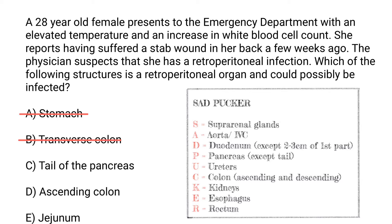The tail of the pancreas — this is where things can be a bit specific, so let's leave that one, because we know some aspect of the pancreas is going to be retroperitoneal and some aspect is going to be intraperitoneal. Ascending colon: we know that the ascending colon is a retroperitoneal organ, so we're going to keep it. Jejunum is going to be an intraperitoneal organ, therefore we're left with C and D.